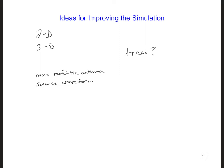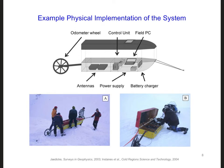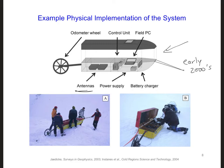After improving our model, we can also think about physically testing the system. One option is to put the radar system and the antennas on a sled, which can then be pulled by hand or behind a snowmobile. Here are some pictures from a group that built such a radar system in the early 2000s. In this case, the sled is carrying the antennas, a pulse generator, the receiver electronics, a power supply, and a portable laptop for displaying the results.